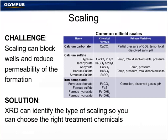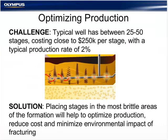A typical well in North America has between 25 to 50 fracturing stages or more, costing close to $250,000 per stage, with a typical production rate of only about 2% from these wells. Placing stages in the most brittle areas of the formation will optimize production from those placements, provides an enormous reduction in cost, increases your production rate, and minimizes the environmental impact of fracturing. Understanding the mineral composition of these shale resource plays is particularly important with regards to the completion of horizontal wells and maximizing well performance. Steering these horizontal wells within a narrow pay zone with a comprehensive understanding of rock properties is required to avoid geohazards and design effective hydraulic fracture jobs to stimulate the maximum volume of reservoir and optimize recoverable reserves.